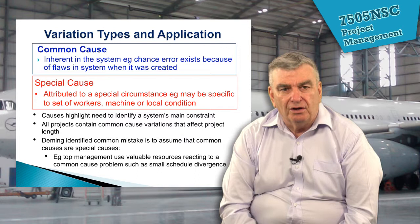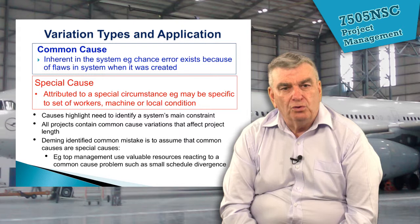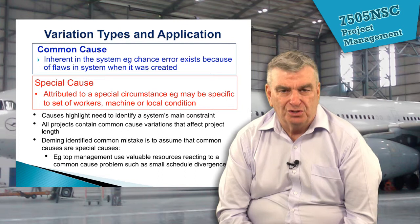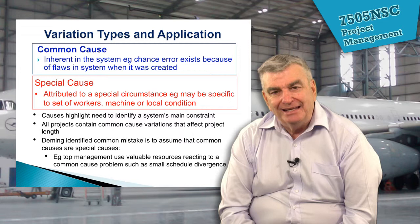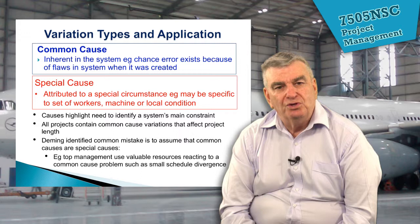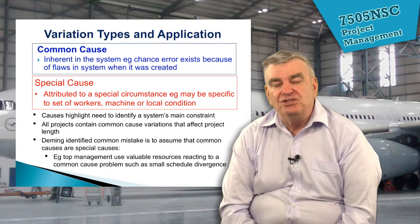In projects, what can cause a constraint and therefore cause variations can be either a common cause or a special cause. A common cause is simply inherent in a system itself — chance errors come up in projects, people make mistakes. We have to recognise that common causes are a fact of life and we shouldn't treat them as special causes where we start making changes to the project. We'll discuss the difference between a common cause — a chance variation we can afford to ignore — and a special cause where we can actually do something about it.